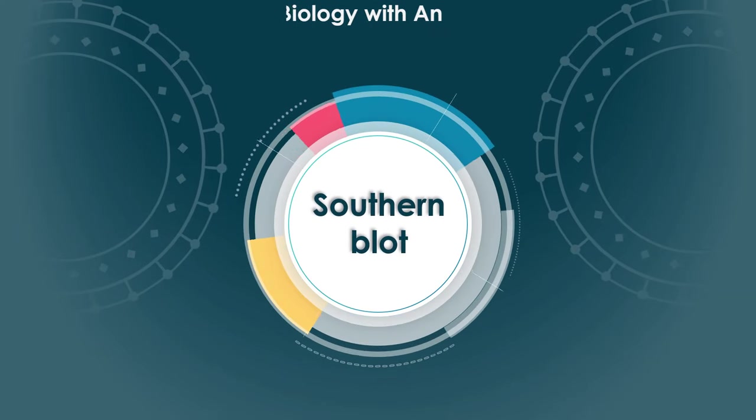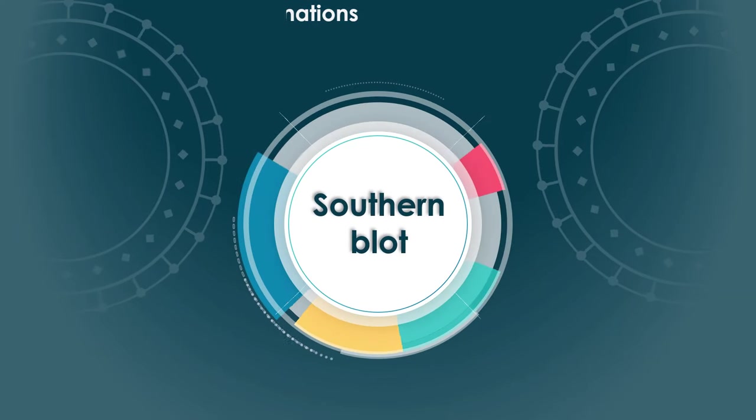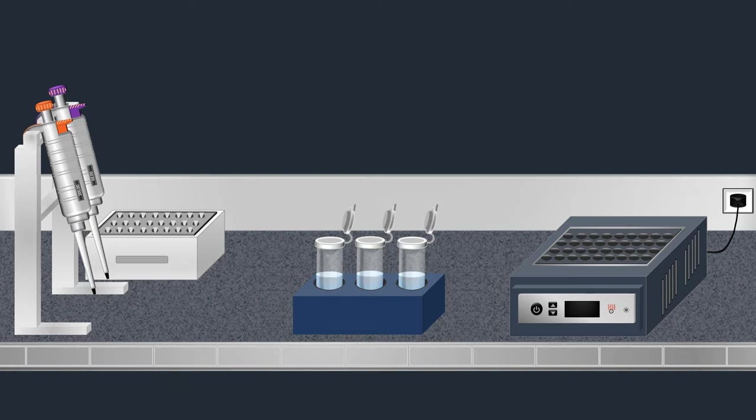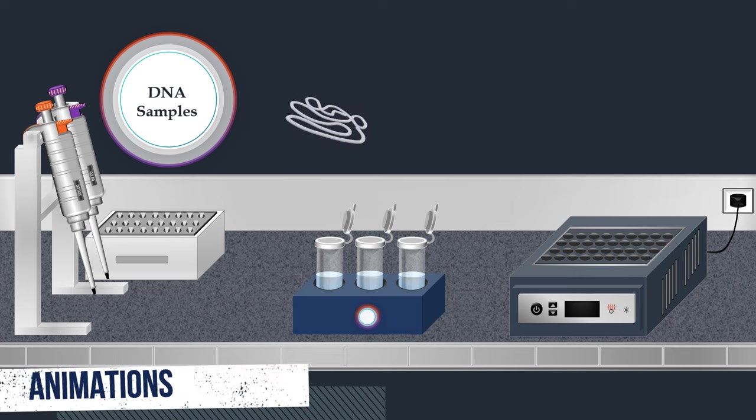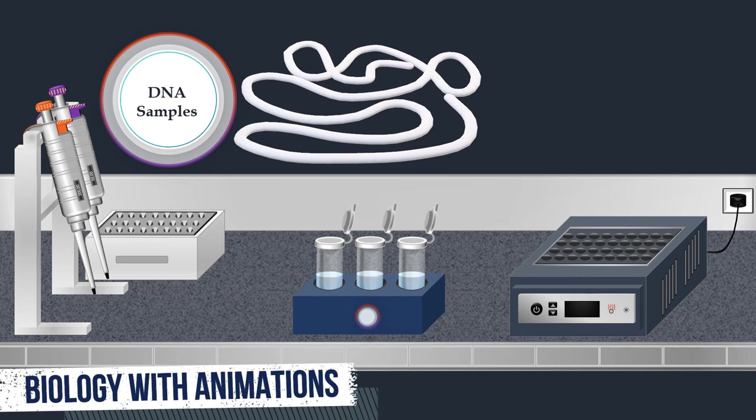Southern blot is a classic technique in molecular biology that reveals information about DNA identity, size, and abundance, and it can be used for detection of a specific DNA sequence in DNA samples.